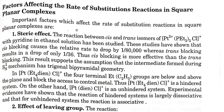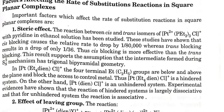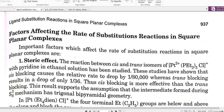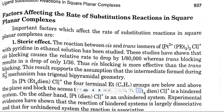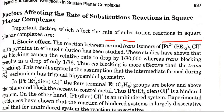We all know that steric effect refers to bulky groups. If we have a reaction between cis and trans isomers of this complex with pyridine in ethanol solution, we see that cis-type blocking generates a drop in the relative rate.